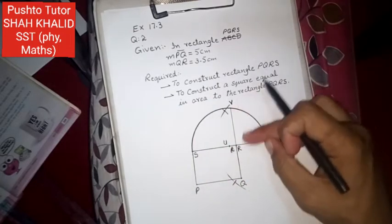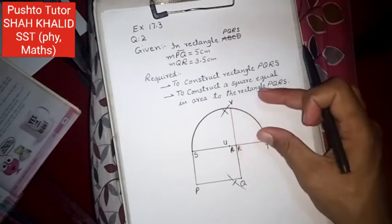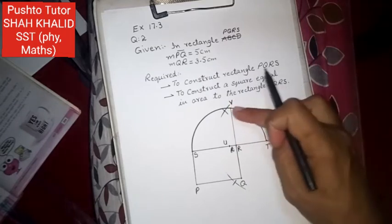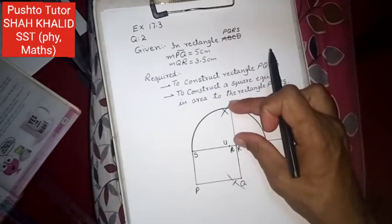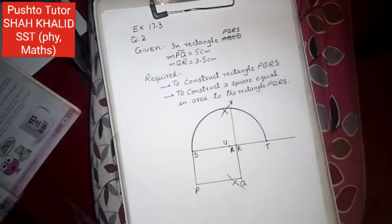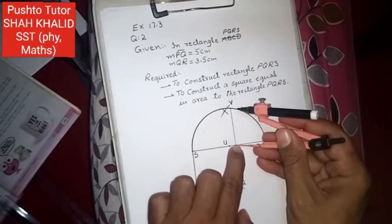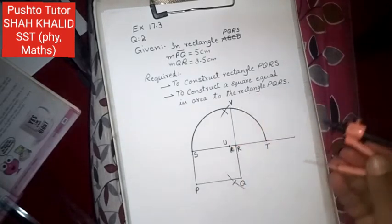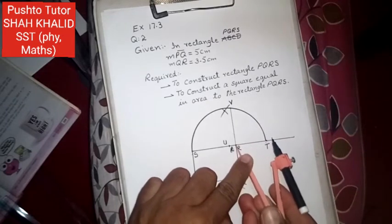Label it as V. This will be one side of the required square. RV will be the length. So that side of the square is RV. The other sides are also RV length. Now at R, using compass with opening RV, draw an arc above.